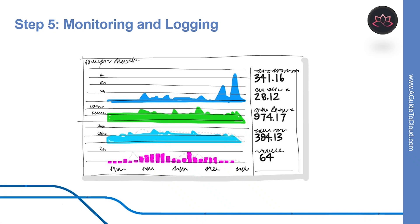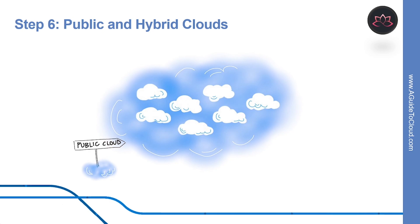Step five is monitoring and logging, where you monitor and log running applications including production environments for application health as well as customer usage. This helps organizations form a hypothesis and quickly validate or disprove strategies, with rich data captured and stored in various logging formats. Public and hybrid cloud have made the impossible easy — removing traditional bottlenecks and commoditizing infrastructure, giving you a data center without limits whether you use IaaS or PaaS.